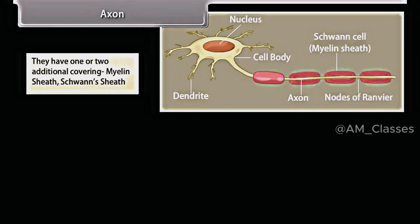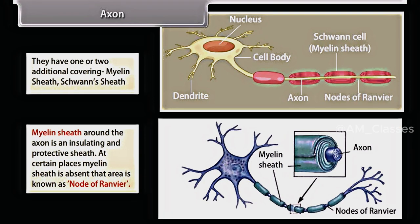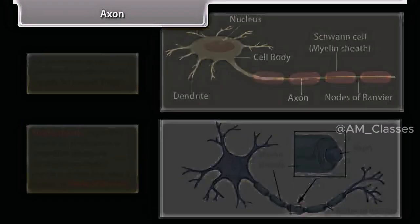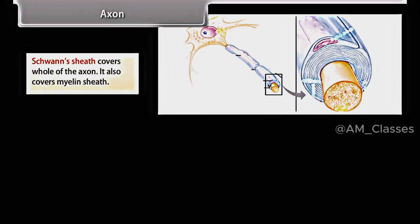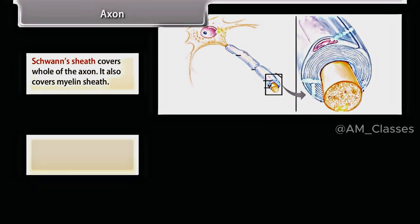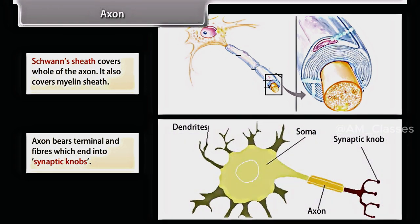The axon has one or two additional coverings: myelin sheath and Schwann sheath. The myelin sheath around the axon is an insulating and protective sheath. At certain places the myelin sheath is absent, and that area is known as the node of Ranvier. The Schwann sheath covers the whole of the axon, including the myelin sheath. The axon bears terminal end fibers which end into synaptic knobs.